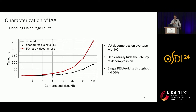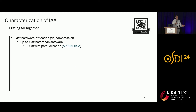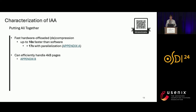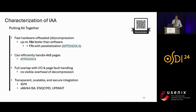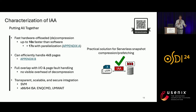A single processing element can do up to 4 GB/s in blocking mode, and a Sapphire Rapids CPU can have up to 32 PEs, so the accelerator can also handle fast storage tiers. In summary, this accelerator achieves up to 10x faster decompression than software, can be additionally accelerated 17x with parallelization, efficiently handles 4KB pages, and its processing fully overlaps with I/O and page fault handling — making decompression overhead essentially invisible. It can be integrated with applications in a transparent and secure way through SVM and ISA support.